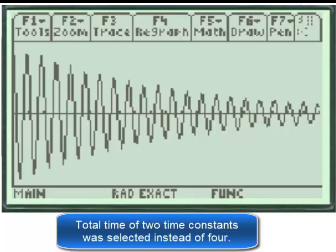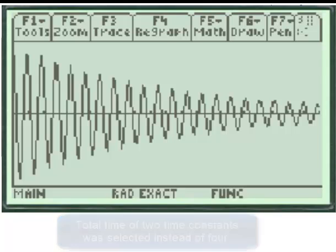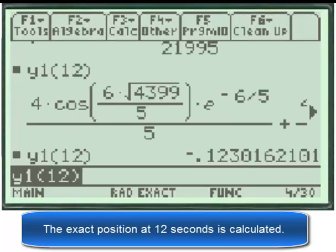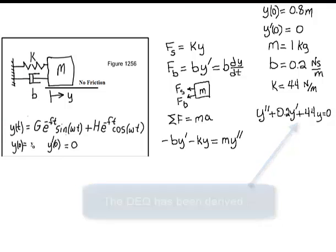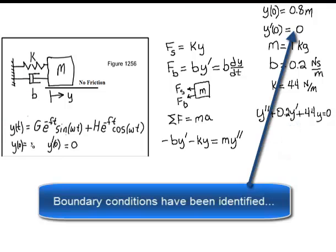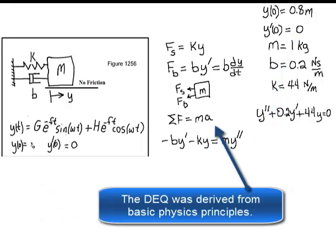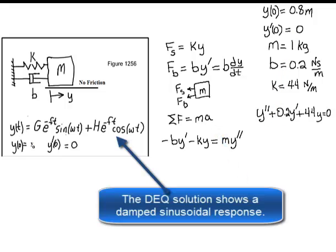A total time of two time constants was selected. The exact position at 12 seconds is calculated. The differential equation was derived from basic physics principles, boundary conditions have been identified, and the differential equation solution shows a damped sinusoidal response.